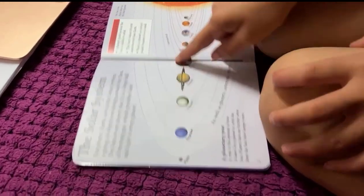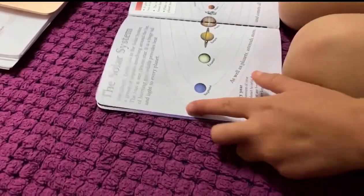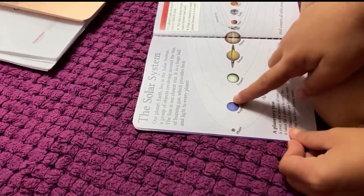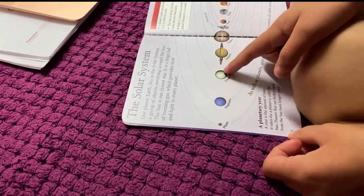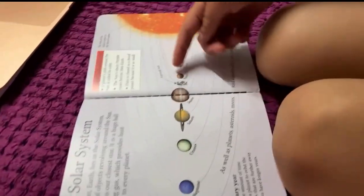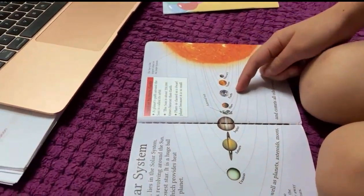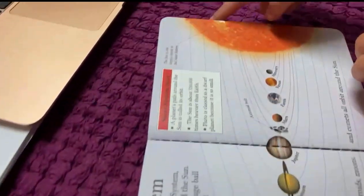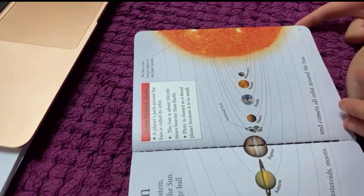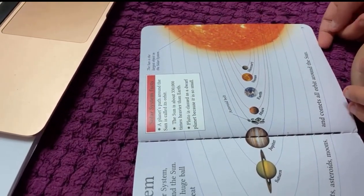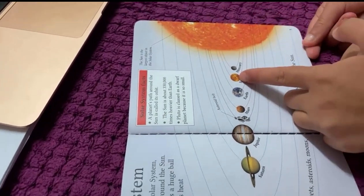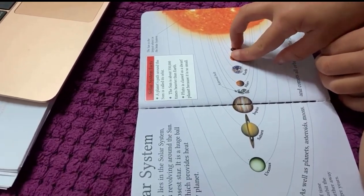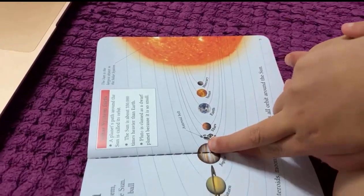So then there were eight planets left. Pluto wasn't an orphan. There was Neptune, Uranus, Saturn, Jupiter, Mars, Earth, Venus, Mercury, and the Sun. The Sun is the biggest and it's very hot, really, even hotter than these two that are hot.